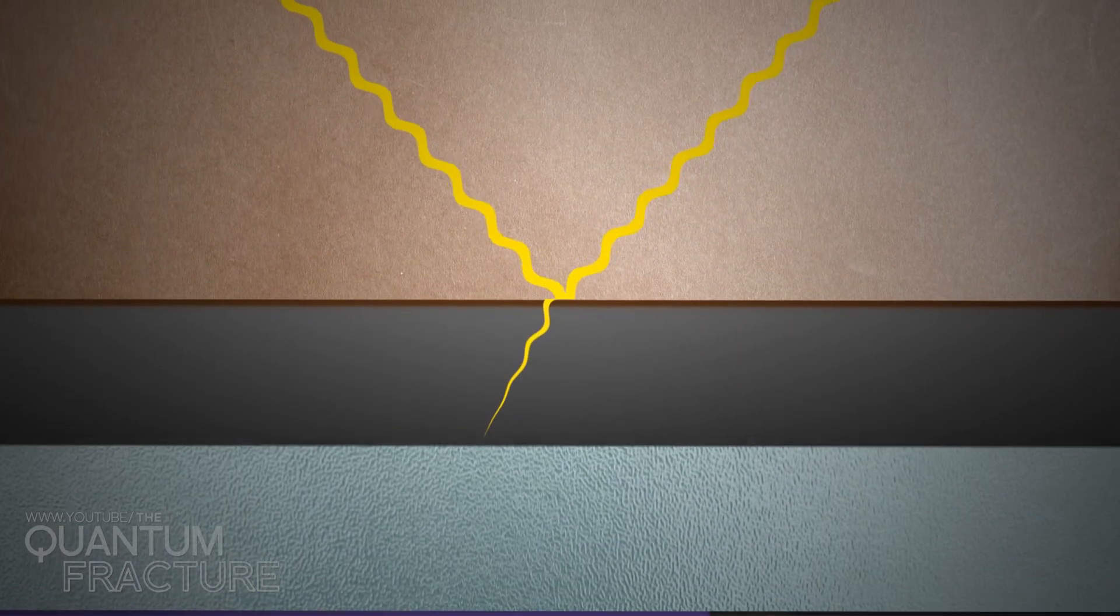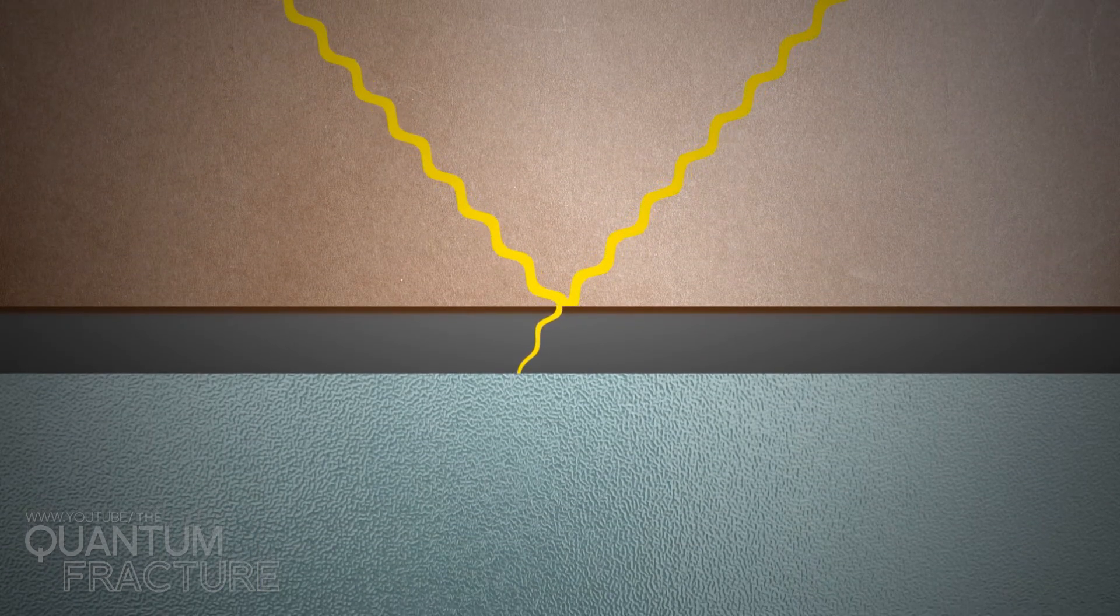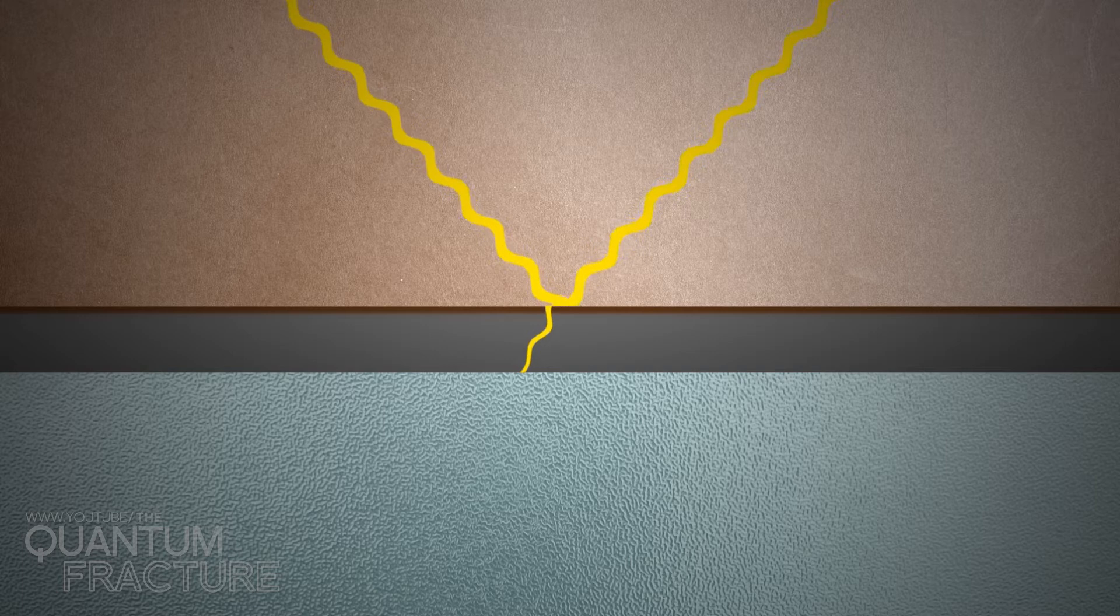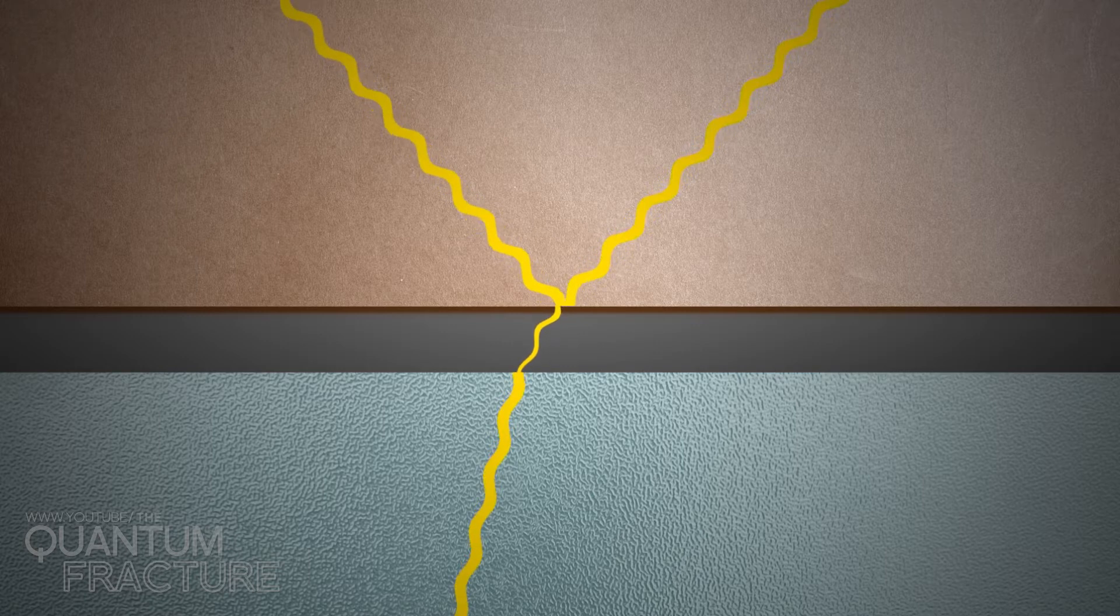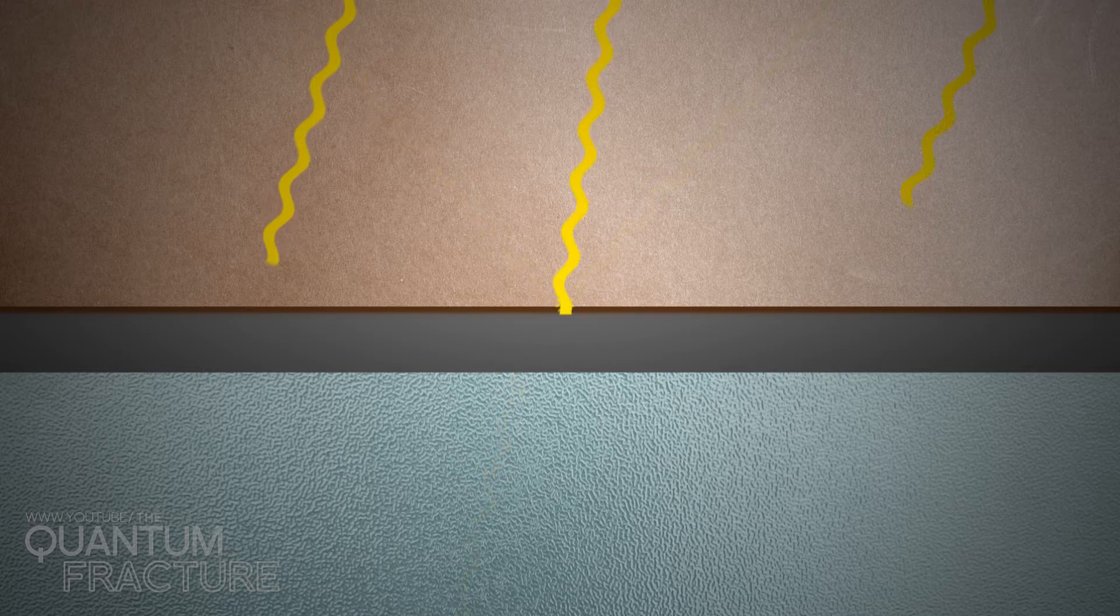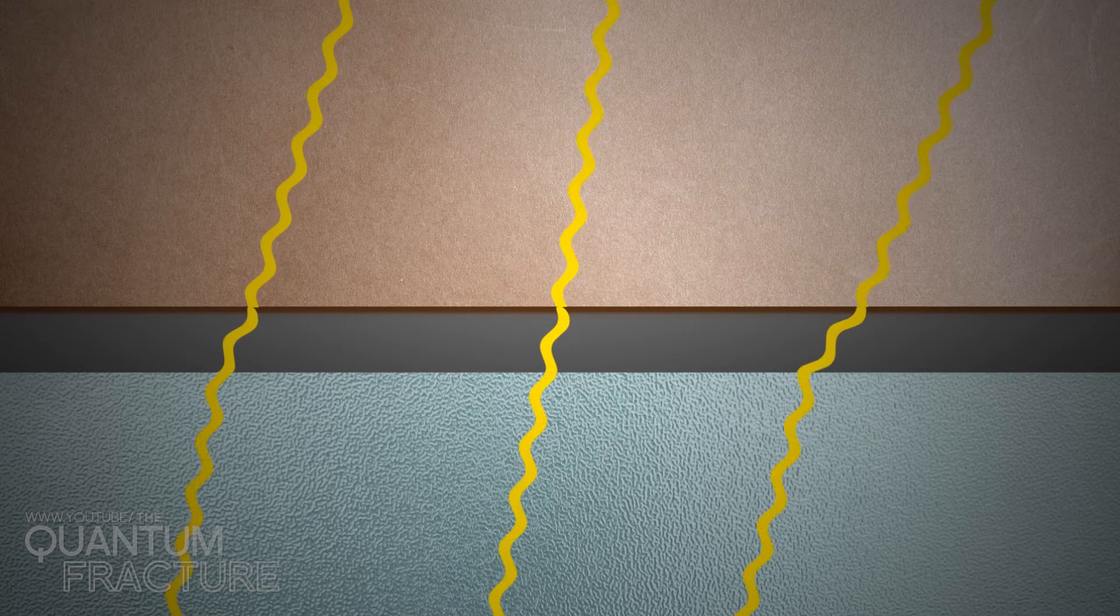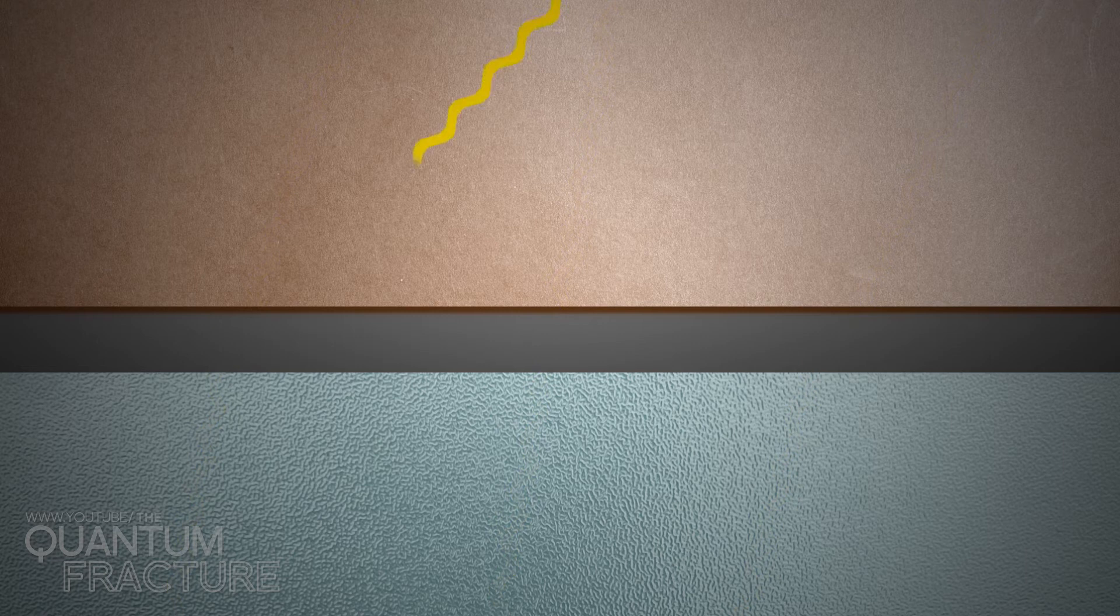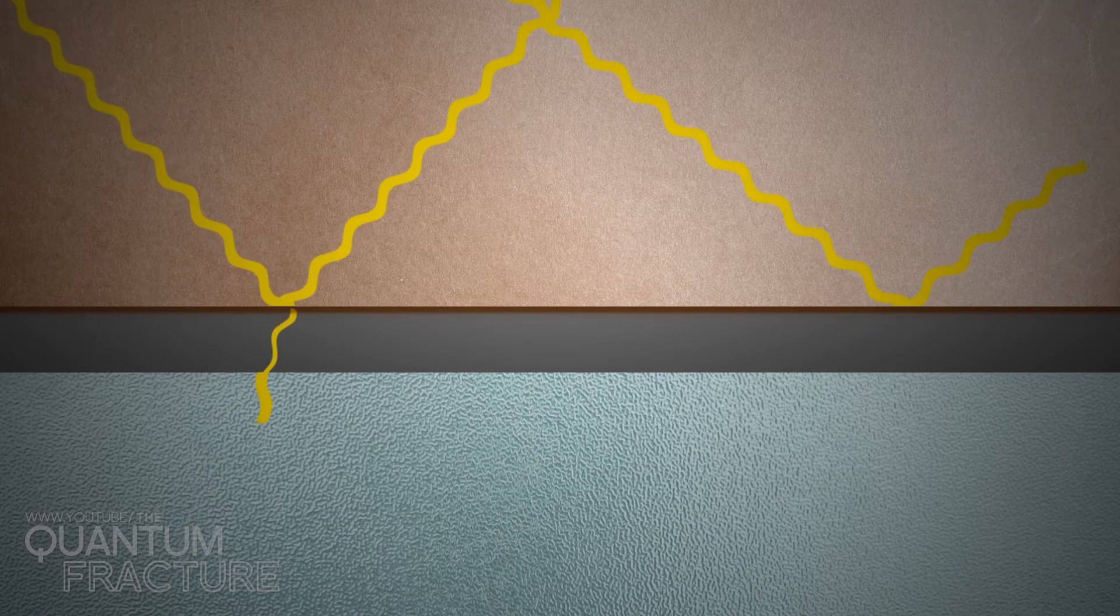But what would happen if we put two surfaces really close together with only a nanometric gap between them? Then the conditions for the evanescent wave change. Instead of petering out in the void, it penetrates the other material and continues to travel normally. In other words, now it's not just waves hitting at the right angle that will be able to radiate outwards. The ones that bounce off the surface also contribute.